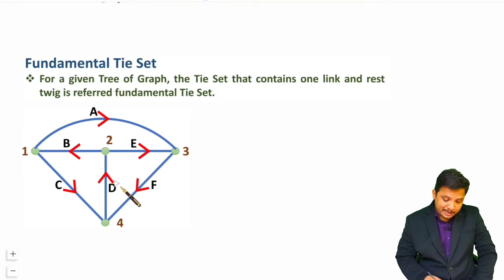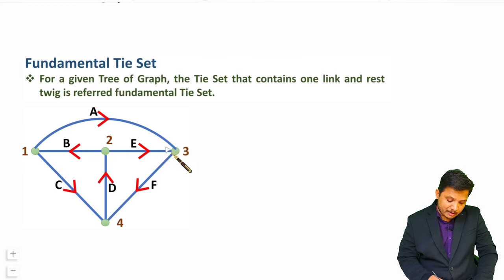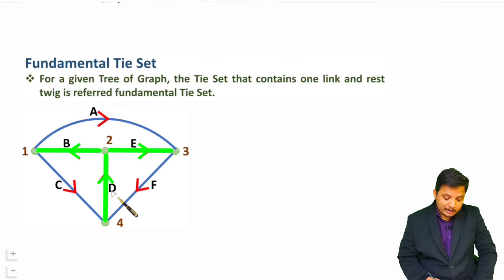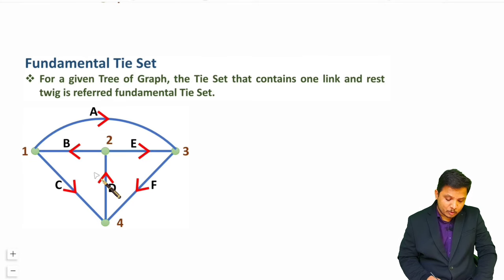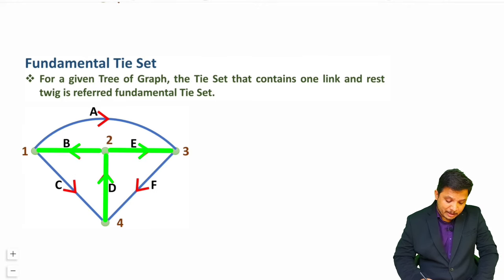Let me explain by a practical example. Here we are given one graph and in this graph let us consider one tree. BED can be one tree. A tree contains no closed loop, it should cover all the nodes, and the number of branches in the tree will be total nodes minus one. Here four nodes are there, so total branches in the tree will be four minus one equals three. So BED is one tree of this given graph.